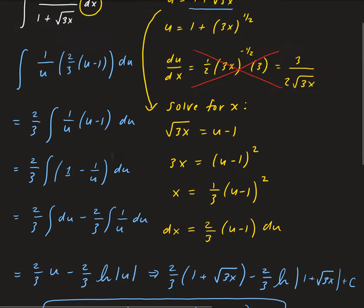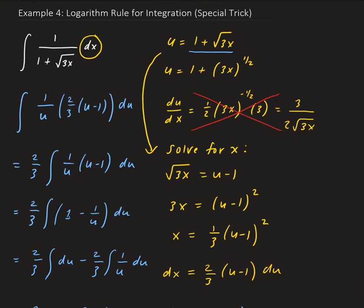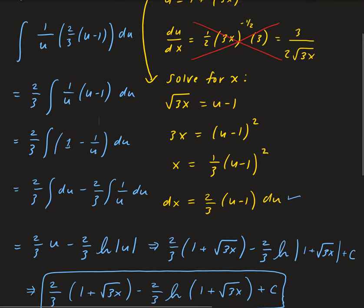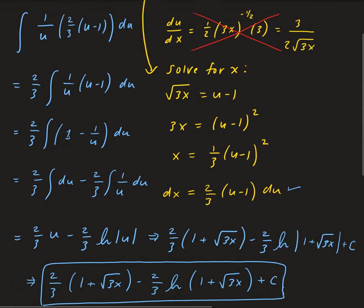We did this by letting u be the denominator. We took the derivative of u with respect to x, but that didn't work because that expression didn't appear anywhere else in our original function. So we went back and solved for x from u, then took the derivative of that to get the replacement for dx in terms of u. From there, we took the integral and replaced u with 1 plus the square root of 3x to get our result.